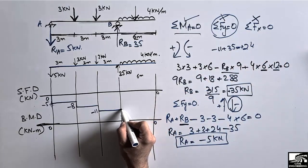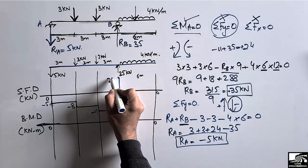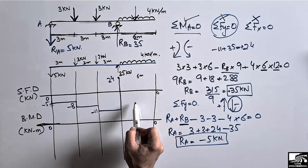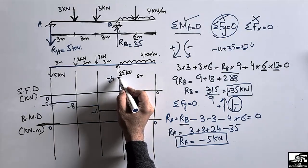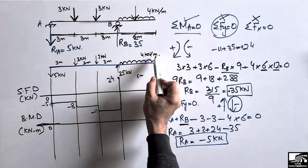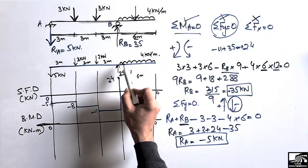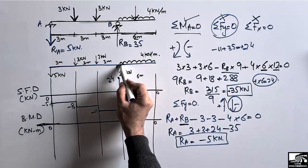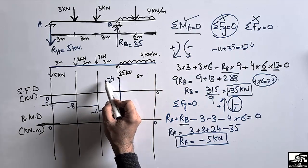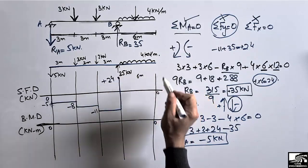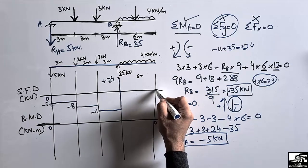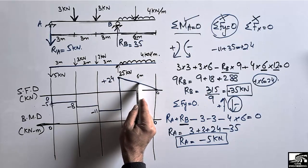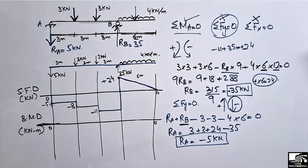The shear force jumps to +24 kN at the support RB. Then the distributed load of 4 kN/m acts downward over 6 meters, giving a total of 4 × 6 = 24 kN downward. Since +24 − 24 = 0, the shear force reduces linearly from +24 to 0 over the 6-meter distributed load region. This completes the shear force diagram.